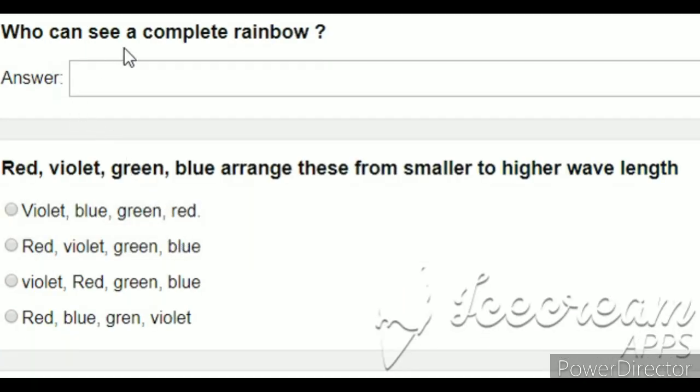Next question: Who can see a complete rainbow? We can see a complete rainbow. Next question: Red, Violet, Green, Blue - arrange these from smaller to higher wavelength. According to VIBGYOR rule: first violet, then blue, then green, then red. So the answer is violet, blue, green, red.